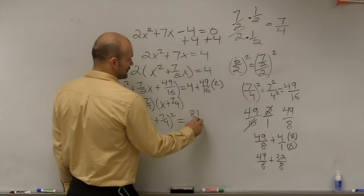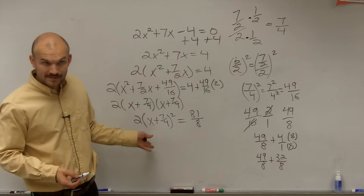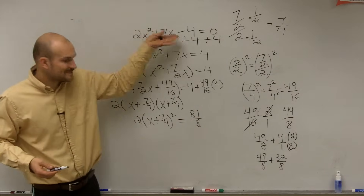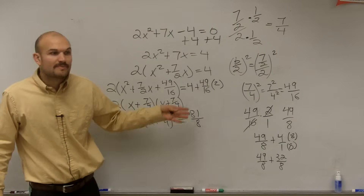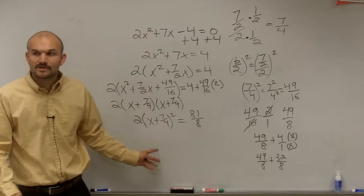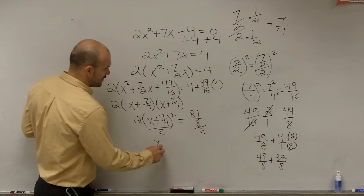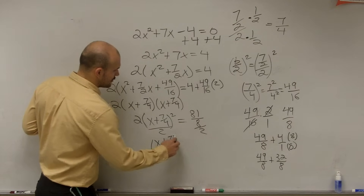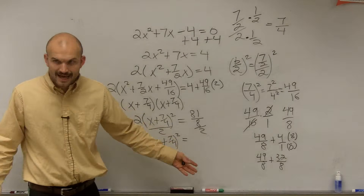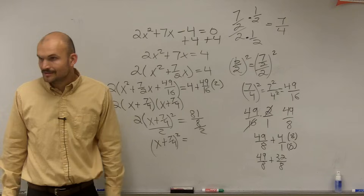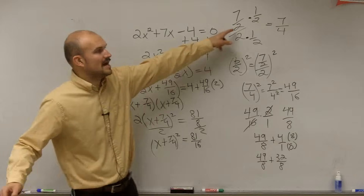So I have 81-eighths. Now I need to divide both sides by 2 to undo the multiplication. Before I can square root both sides I have to undo that multiplication, so I divide by 2 on both sides. Therefore I have x plus 7-fourths squared equals 81-eighths divided by 2. Multiplying by the reciprocal gives you 81 over 16.